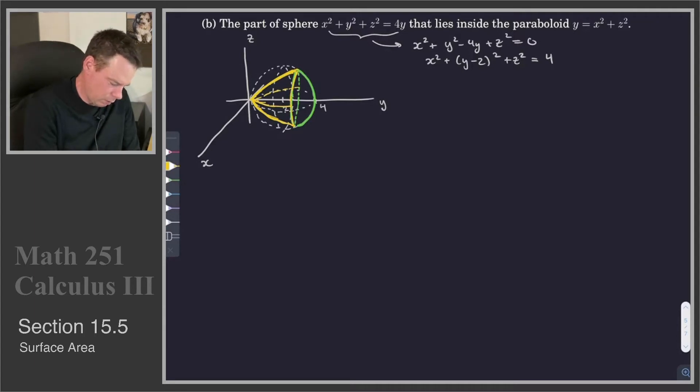This intersection of the sphere and the paraboloid is one thing we are interested in. So where do they intersect? Maybe we'll color that purple. Where's their intersection? So we've got, for the paraboloid, y is equal to x squared plus z squared. So I can take my equation from my sphere, which is x squared plus y squared plus z squared, and I can replace the x squared plus z squared with a y. So we get y plus y squared is equal to 4y. So there's our intersection.